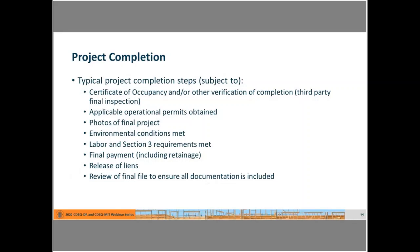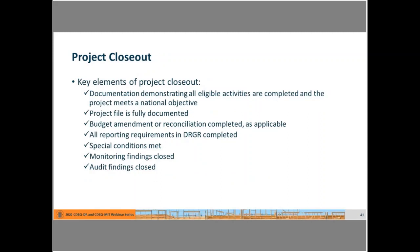Typical project completion steps include obtaining a certificate of occupancy or other third-party final inspection verification, obtaining any operational permits, photos of the final project, documentation that environmental conditions have been met, labor and Section 3 requirements met, final payment including retainage if held, release of liens, and review of the final file to ensure all documentation is included. For project closeout, although the project is complete and everyone is ready to move on, now is not the time to try to build your closeout file from scratch. Luckily, you've been documenting the project file from the beginning, so closeout should be straightforward.